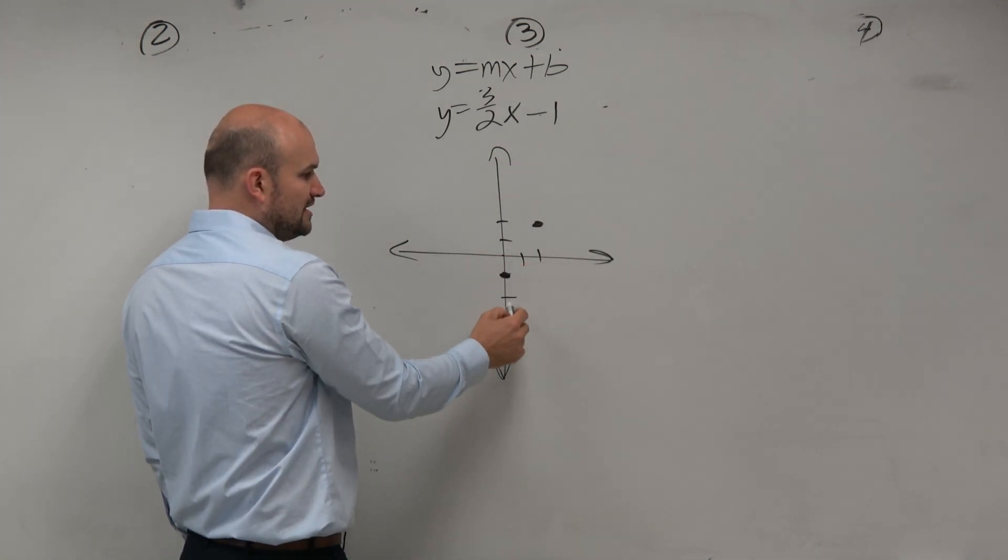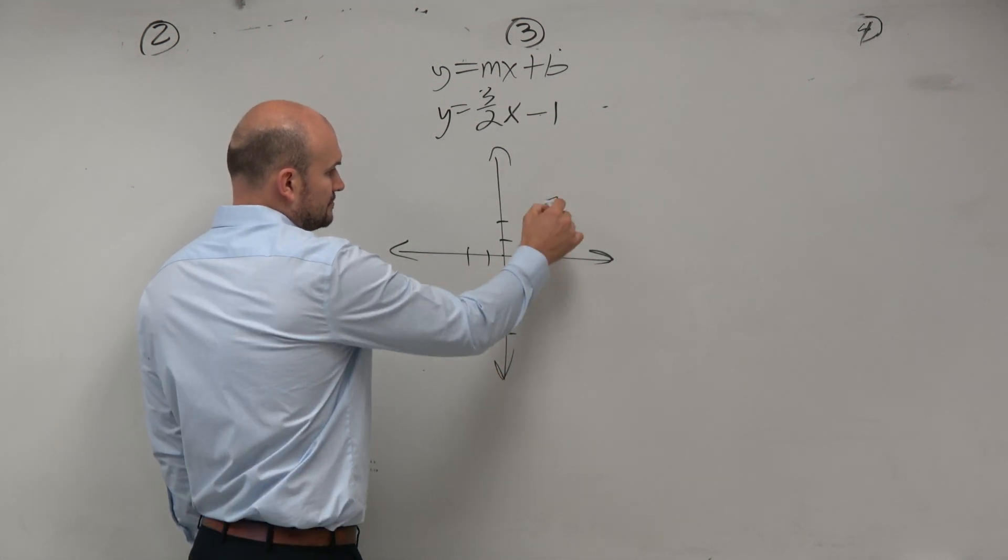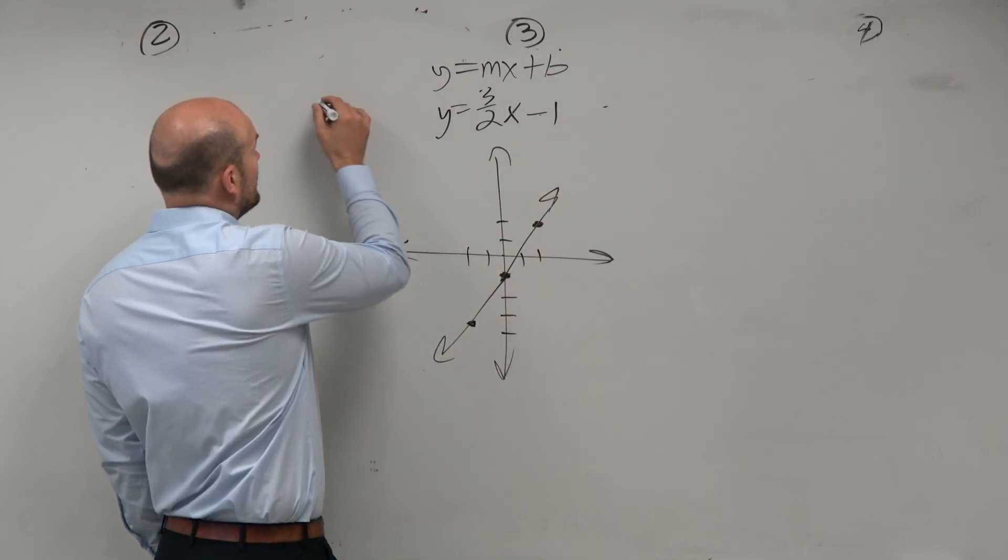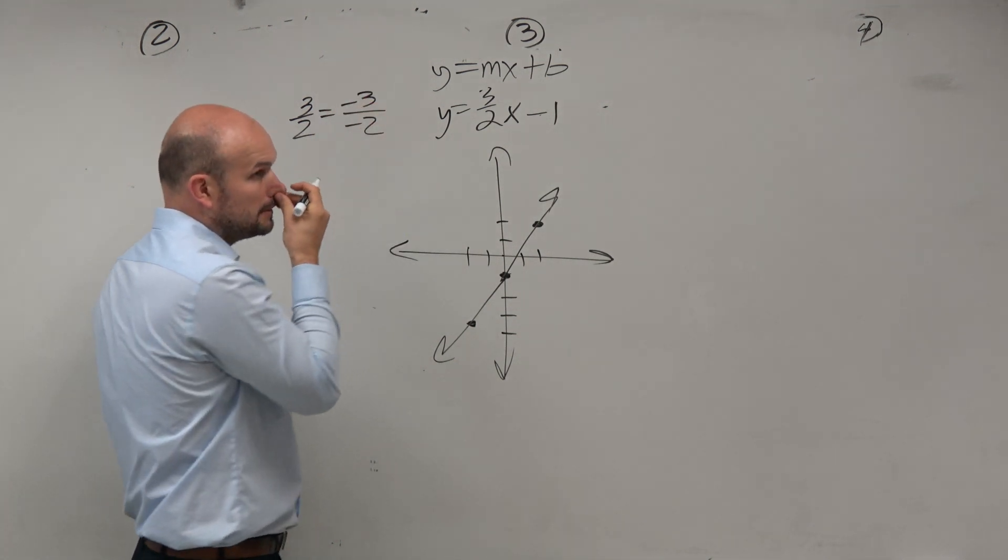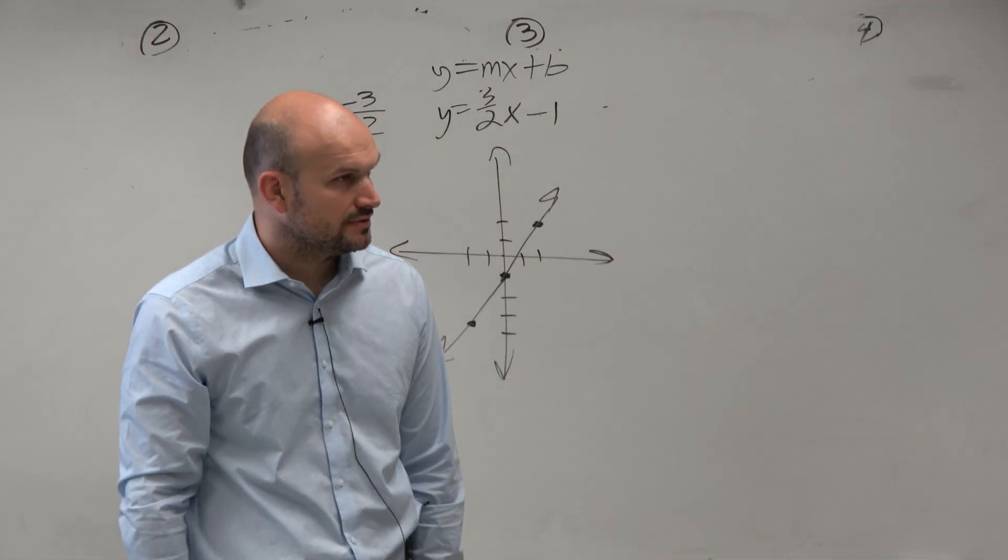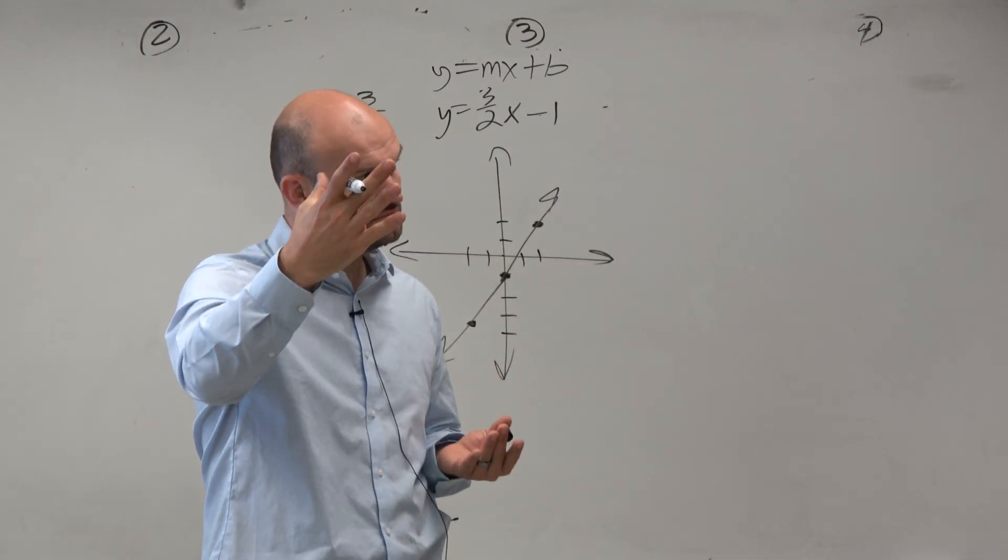But going up and to the right is really the same thing as going down and to the left. Right? 3 halves is the same thing as down and to the left, as a negative 3 over a negative 2. So sometimes you might want to go to the left instead of going to the right, maybe.